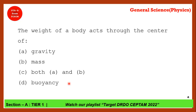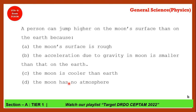A person can jump higher on the moon surface than on earth because the acceleration due to gravity on the moon is smaller than that of earth — option B is correct. There is less gravity on the moon compared to earth, because of which the body experiences less force and can jump higher on the moon surface.